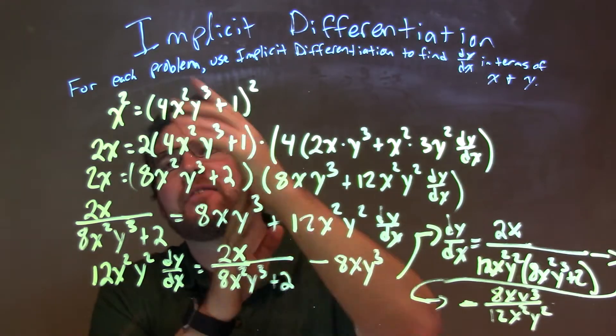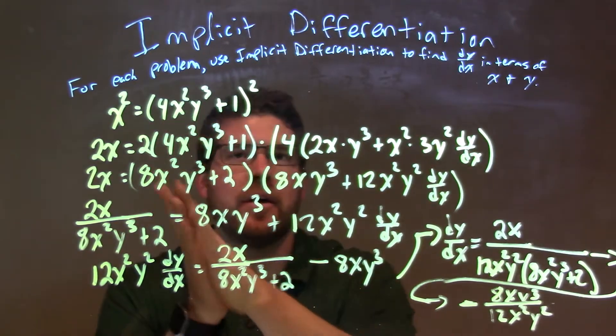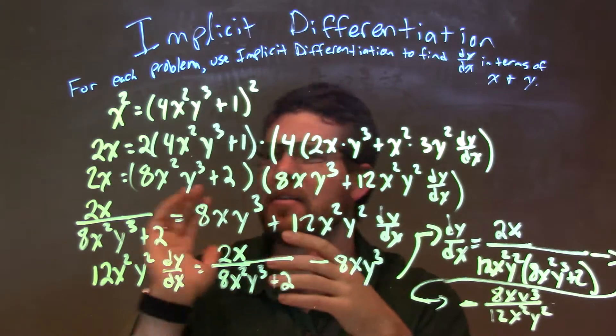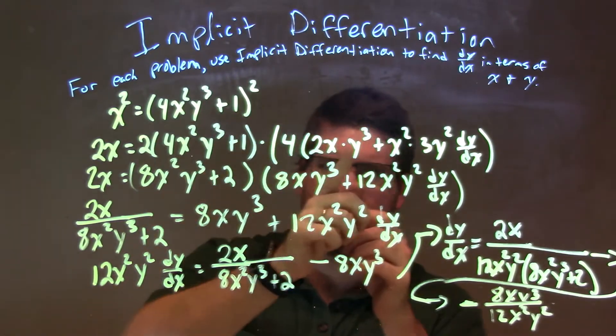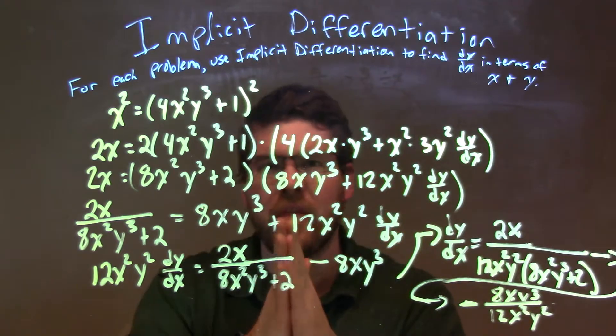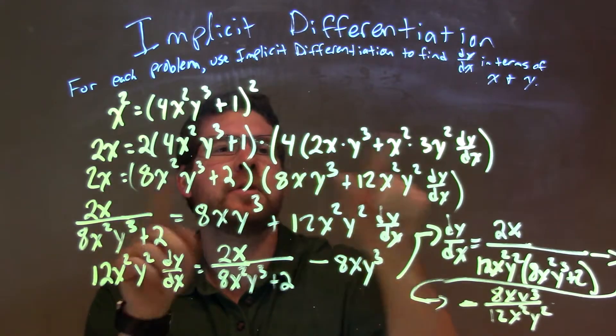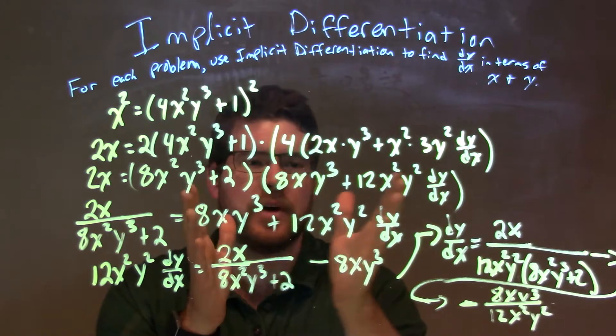So, let's recap. We're given x squared equals parentheses 4x squared y to the third plus 1, to the second power. Left side was easy, gave us 2x. Right-hand side, power rule and chain rule, all of that. Then, what I had to do is I distributed the 4 and the 2 to each of the corresponding parts there and simplified it.